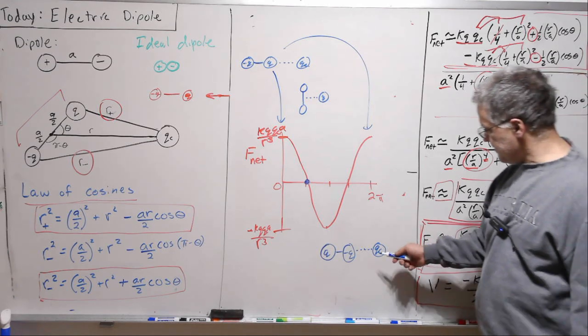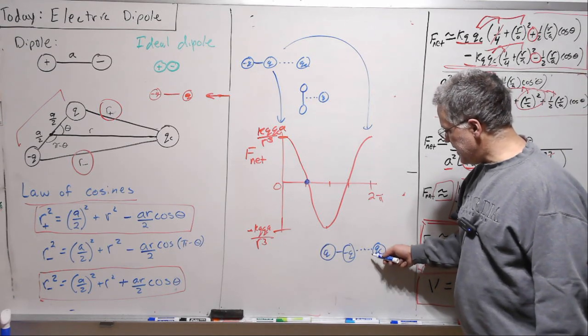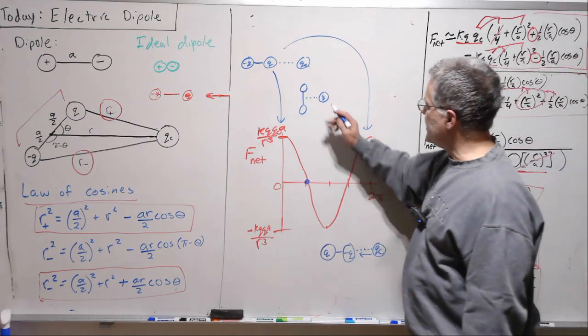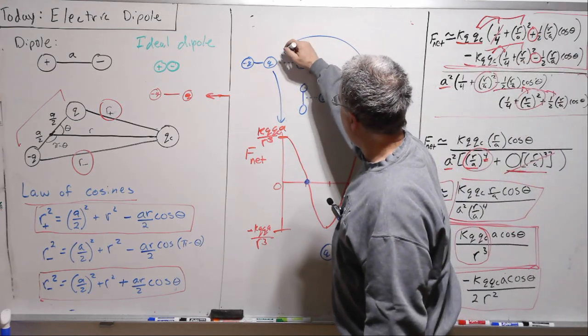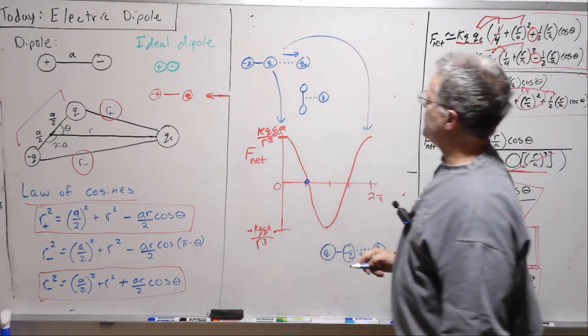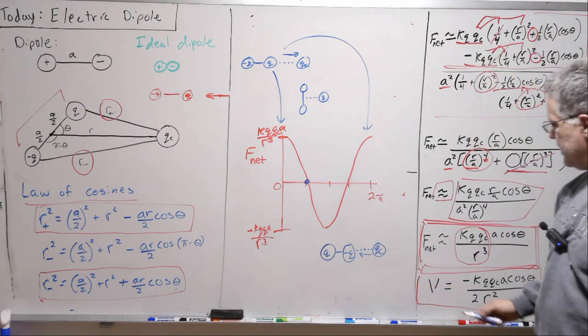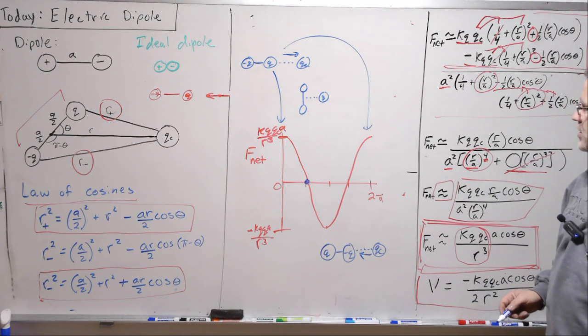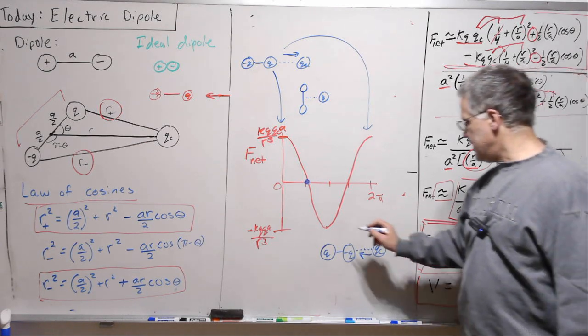And then let's look at here. That's like that. Now we're going to get a net negative force, and we would be attracted. So here we're going to get a net positive force and we'll be pushed in this direction. Here we'll get a net negative force and we'll be pushed in, or pulled in that direction.